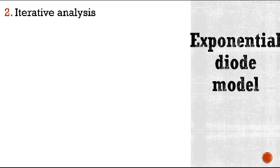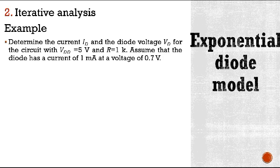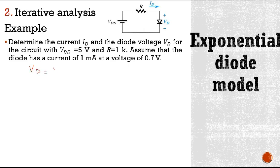Iterative analysis: the previous equations can be solved using a simple iterative procedure, illustrated in this example. Determine the current id and the diode voltage vd for the circuit where Vdd is 5 volts and R is 1 kilo ohm. We assume the diode has a current of 1 milliampere and a voltage of 0.7 volts. To begin the iteration, we assume vd equals v1 equals 0.7 volts and i1 equals 1 milliampere — these given values are v1 and i1.